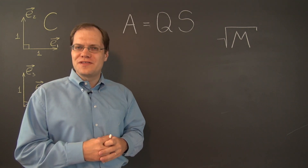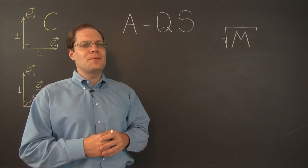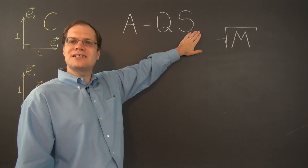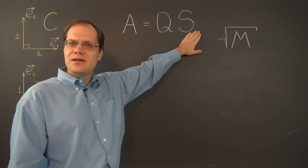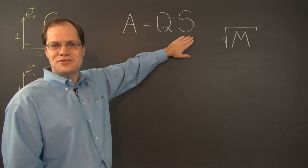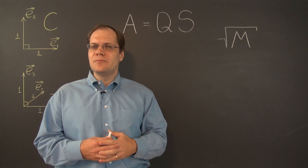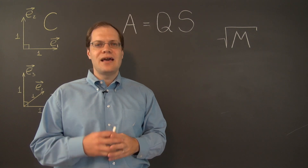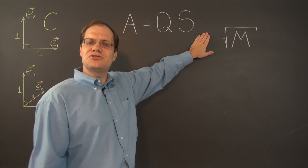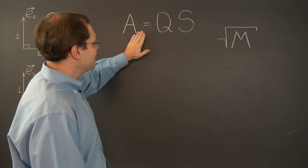In this video we're going to prove this theorem: that any matrix whatsoever can be represented as a product of an orthogonal matrix Q and a symmetric matrix S with non-negative eigenvalues. We'll do it by discovering an algorithm for constructing these matrices. Along the way, we'll conclude that this decomposition is unique — there's only one orthogonal matrix Q and only one symmetric matrix S with non-negative eigenvalues such that A equals QS.